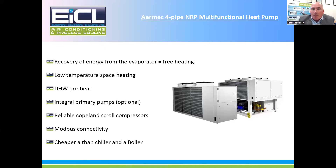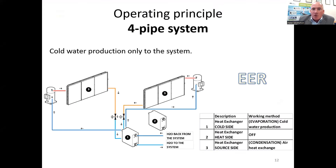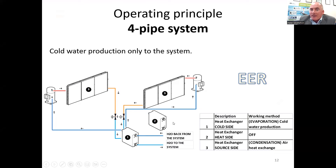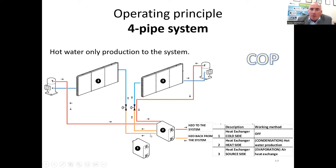There are three modes of operation. The first is cooling only, where all your circuits are dedicated to providing cooling only. You can see there are two heat exchangers — one for cooling and one for heating — and the heating is not being used when acting in cooling mode. So basically it's acting like a chiller, plain and simple.